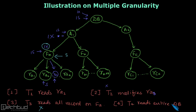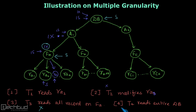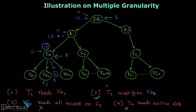T4 reads the entire database DB. In order to read the entire database, transaction T4 needs to get a shared lock here. To get a shared lock, we check whether shared is compatible with intention shared and intention exclusive. Referring to the compatibility matrix, intention exclusive is not compatible with shared, so we cannot perform this operation by transaction T4. This means operations one and two can be performed in parallel, but due to the conflict from transaction T2's intention exclusive lock, operations three and four cannot be performed.